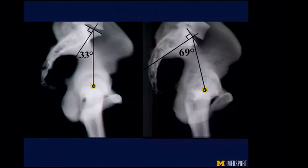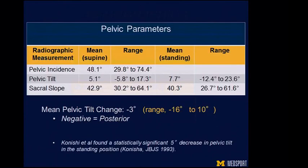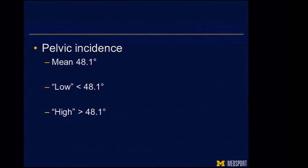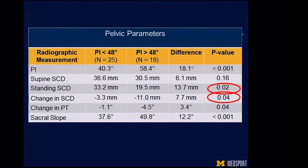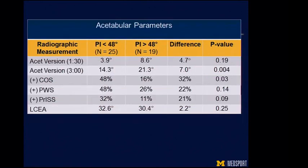Here are two different patients: one with 33 degrees of pelvic incidence and one with 69. We looked at the same parameters as our initial analysis in a very similar cohort. Pelvic incidence averages 48 degrees, with similar changes in pelvic tilt from supine to standing. Separating into low versus high pelvic incidence groups, patients with high pelvic incidence demonstrate greater posterior tilt — 4.5 degrees compared to 1 degree. Similarly, high pelvic incidence shows a more anteverted appearance in the standing position.